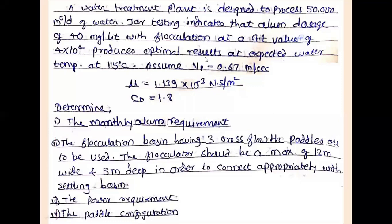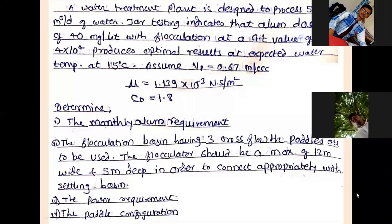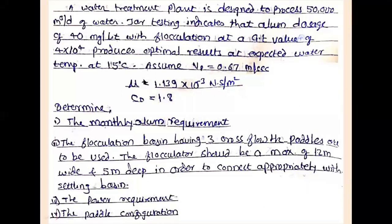Let us solve the problem based upon the design of a Carey flocculator. A water treatment plant is designed to process 50,000 cubic meters per day of water. Jar testing indicates that an alum dosage of 40 mg per liter with flocculation at a GT value of 4 × 10⁴ produces optimal results at an expected water temperature of 15°C. Assume Vp is equal to 0.67 meters per second.